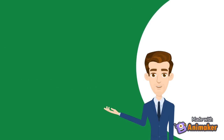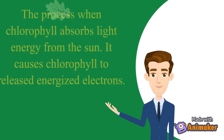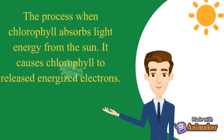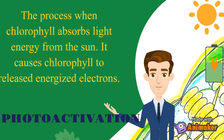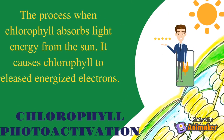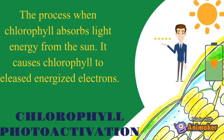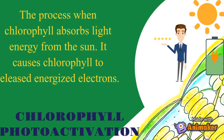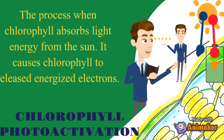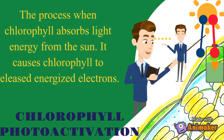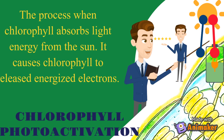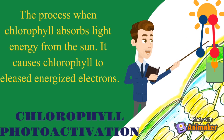The process when chlorophyll absorbs light energy from the sun in photosystem II is called chlorophyll photoactivation. It causes chlorophyll to release energized or excited electrons. Chlorophyll absorbs the red and blue segment of the white light, and photosynthesis occurs efficiently at these wavelengths.